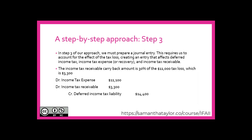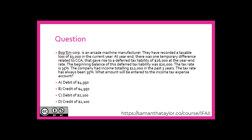Let's take a look at a question. Bob and Corp is an arcade machine manufacturer. They have recorded a taxable loss of $3,000 in the current year. At year end, one temporary difference related to CCA gave rise to a deferred tax liability of $26,000 at the year-end rate. The beginning balance of this DTL was $20,000. The tax rate is 35% and has always been 35%. The company has had income totaling $12,000 in the past three years. What amount will be entered to the income tax expense account? A) debit of $4,950; B) credit of $4,950; C) debit of $2,100; or D) credit of $2,100?